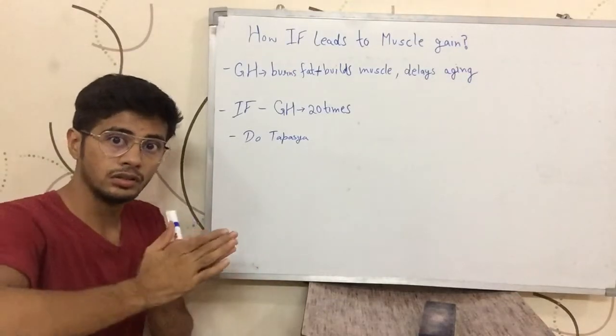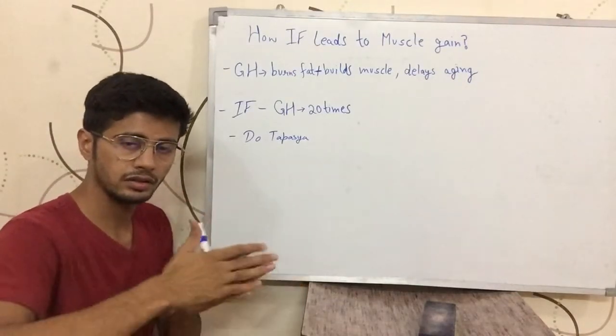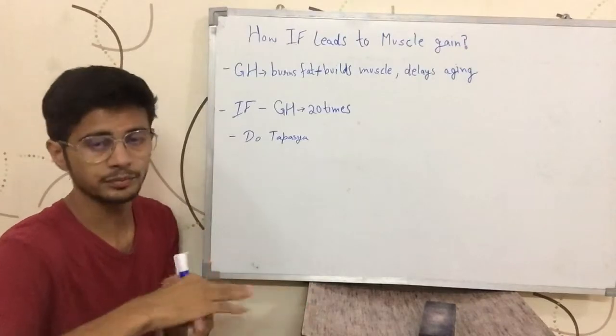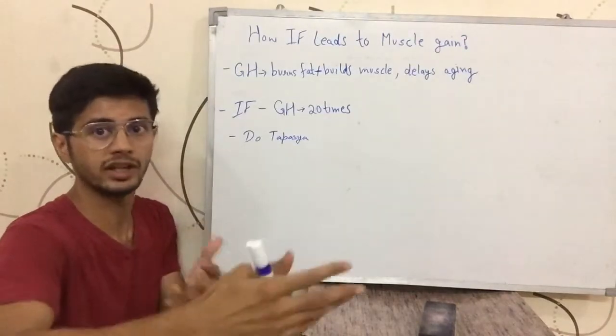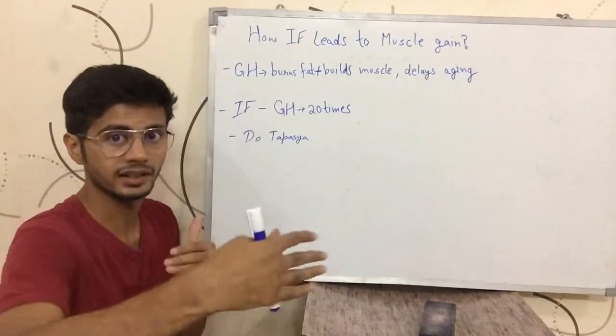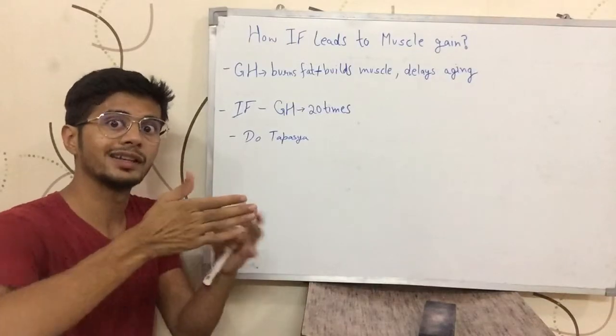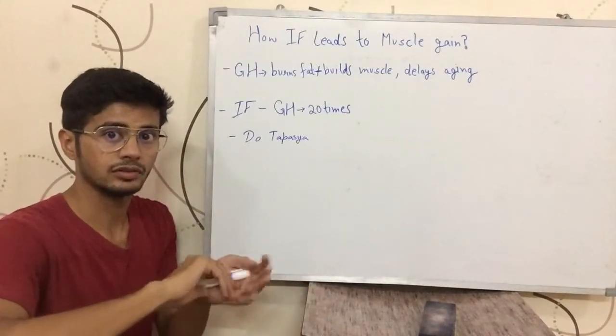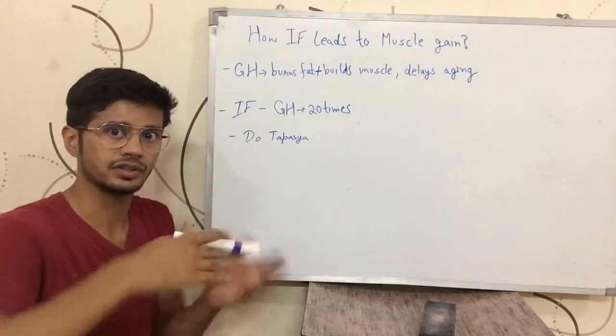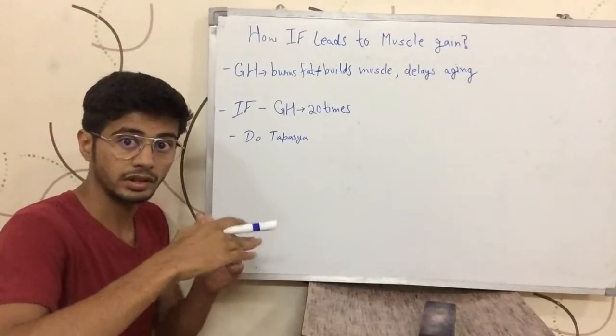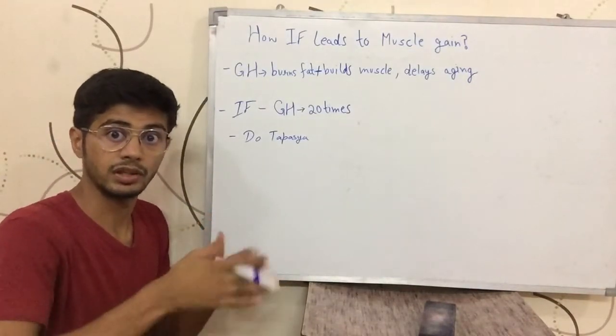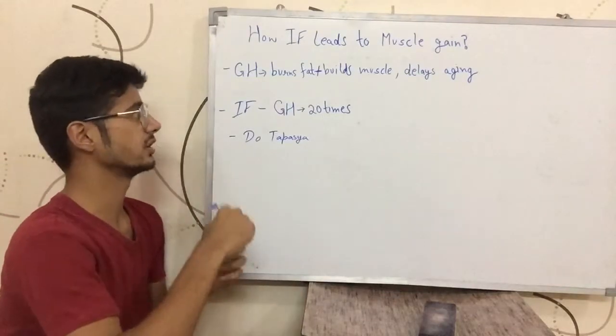You would stay younger for longer. You would get old when you should get old or your ageing would be delayed. You would not look like 60 at the age of 45. You would look like 60 at the age of 60. Or maybe you look even younger at the age of 60. You look like 50 at the age of 60. It delays your ageing.